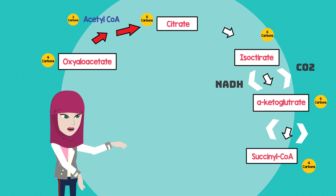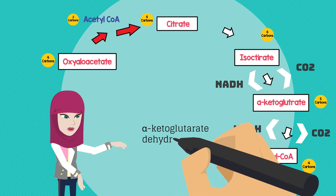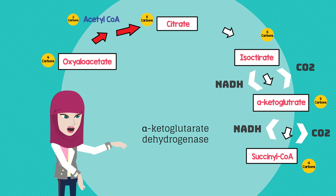Alpha-ketoglutarate is oxidized and becomes an unstable succinyl-CoA. Again, a carbon dioxide is released and an NADH is produced. Alpha-ketoglutarate dehydrogenase catalyzes this reaction.